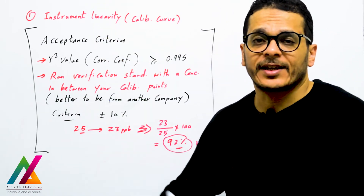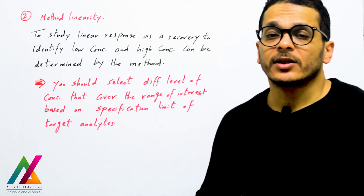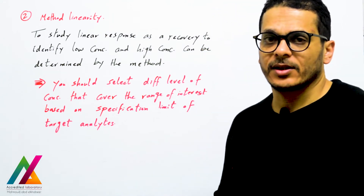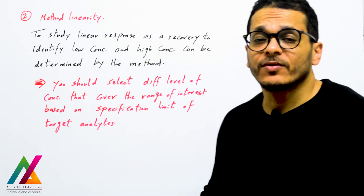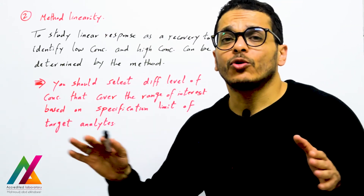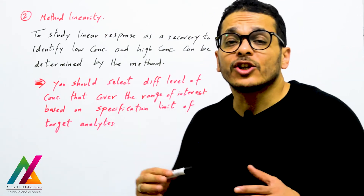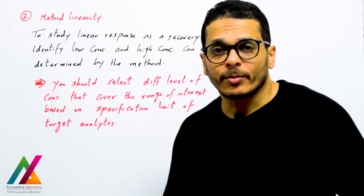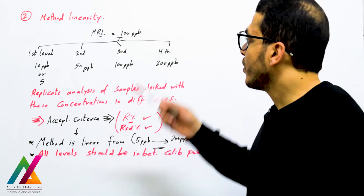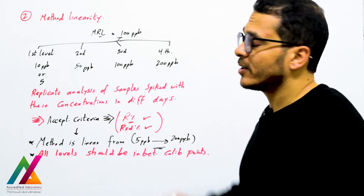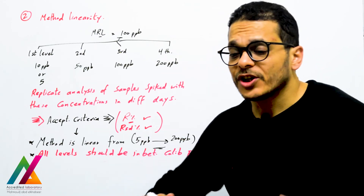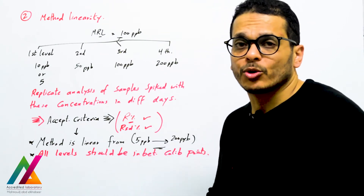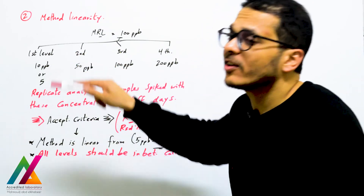Method linearity studies the linear response as a recovery to identify low and high concentrations that can be determined by the method, not just the instrument. You will run spiked samples at different concentration levels covering the range of interest expected to be measured by the method. These levels are based on the specification limit or maximum residue limit of the target analyte.